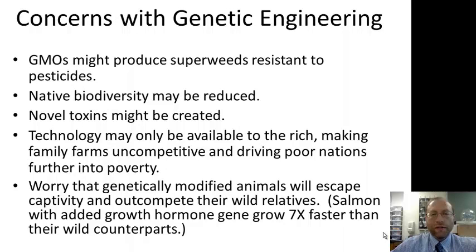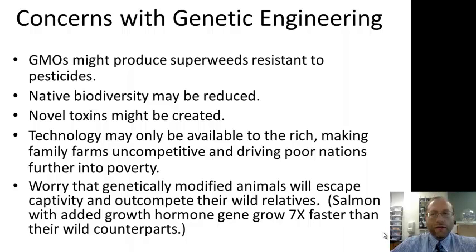Some concerns with genetic engineering: GMOs might produce superweeds resistant to pesticide—for example, herbicide-resistant sunflowers could breed with wild sunflowers, creating superweed populations. Native biodiversity may be reduced, and novel toxins may be introduced. The technology may only be available to the rich, making family farms uncompetitive and driving poor nations further into poverty. Biotechnology companies also make seeds that cannot produce new seeds, so farmers can't save their own seed stock and must keep buying more—and genetically engineered seeds are more expensive than regular seeds.